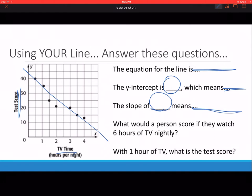Then using your equation for the line, approximate what they would score if they had six hours of TV nightly and with one hour of TV nightly. What are their test scores? Do those for your particular line.